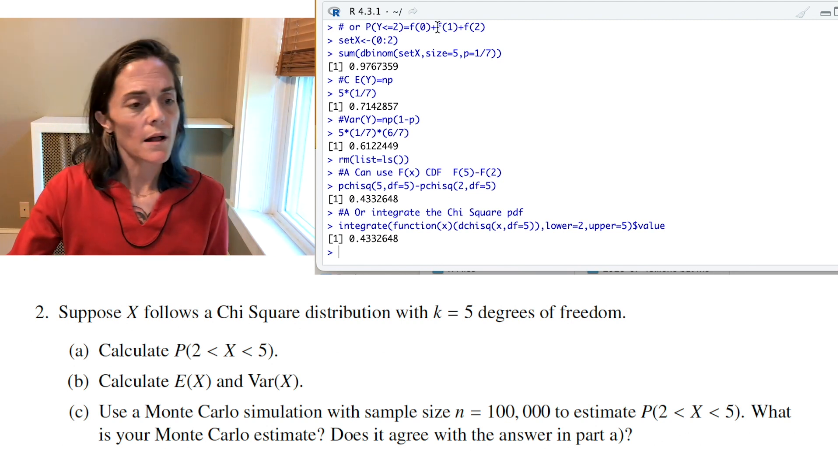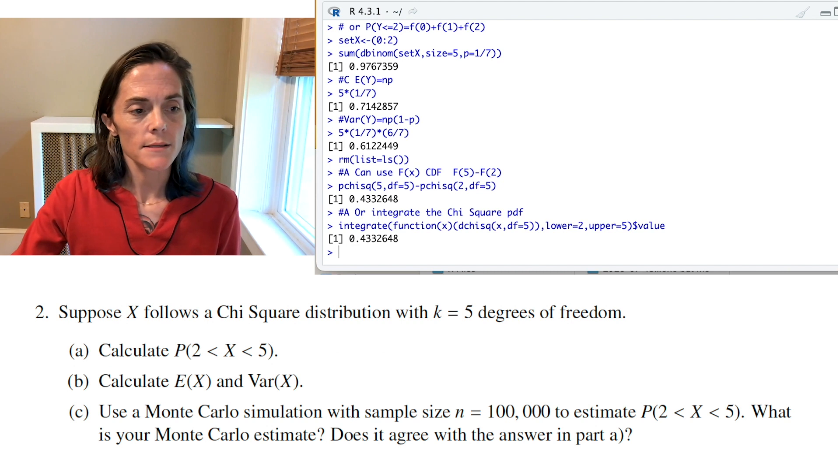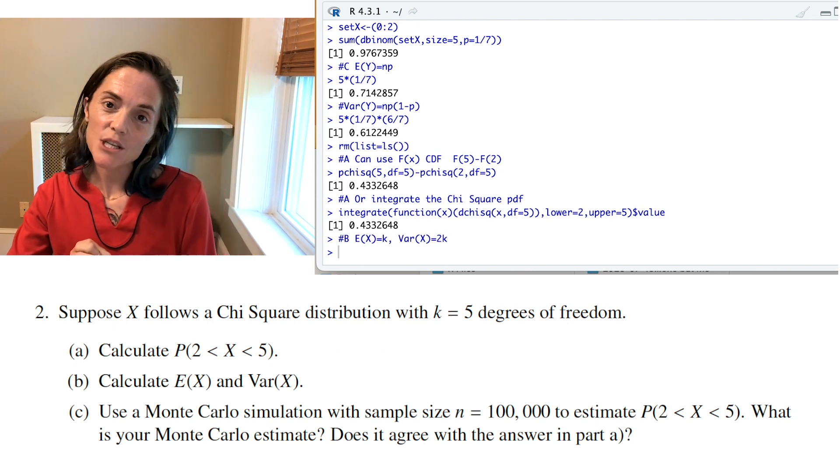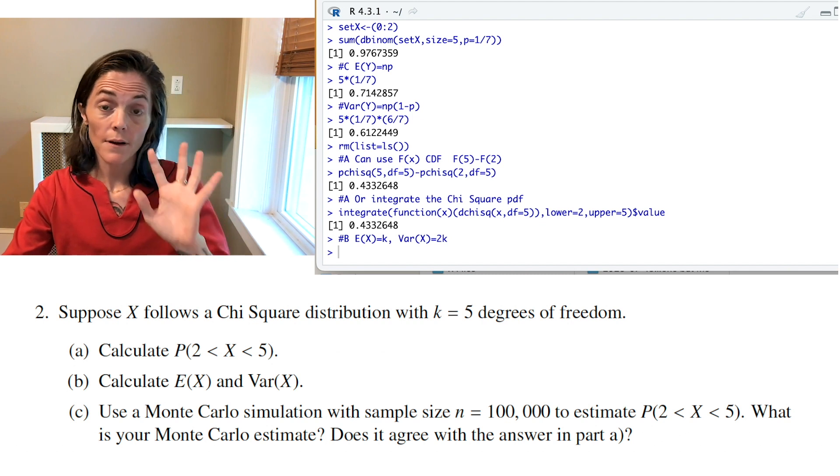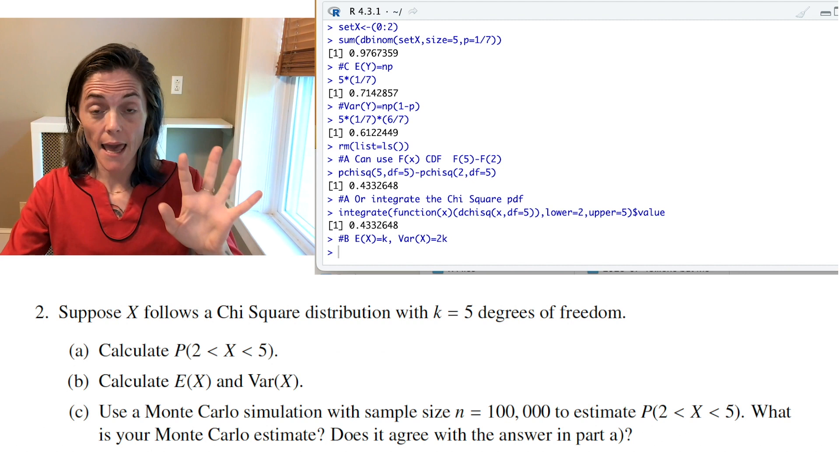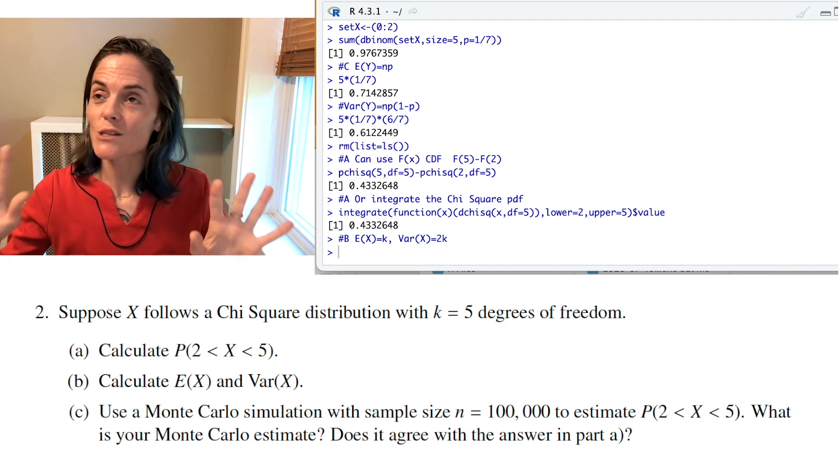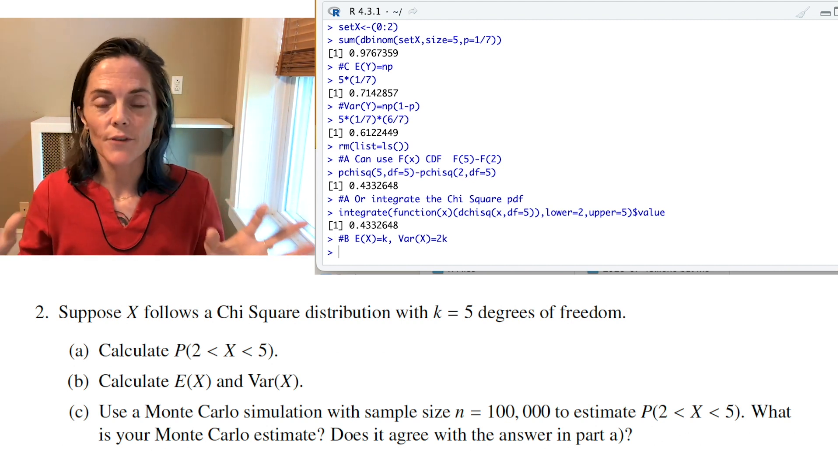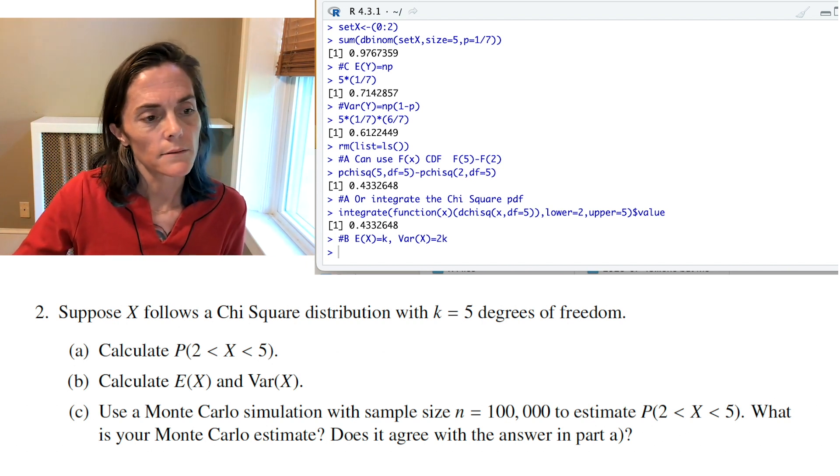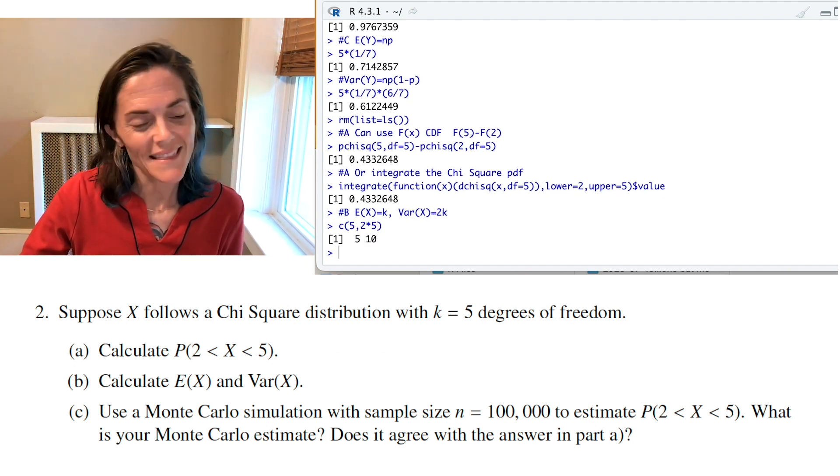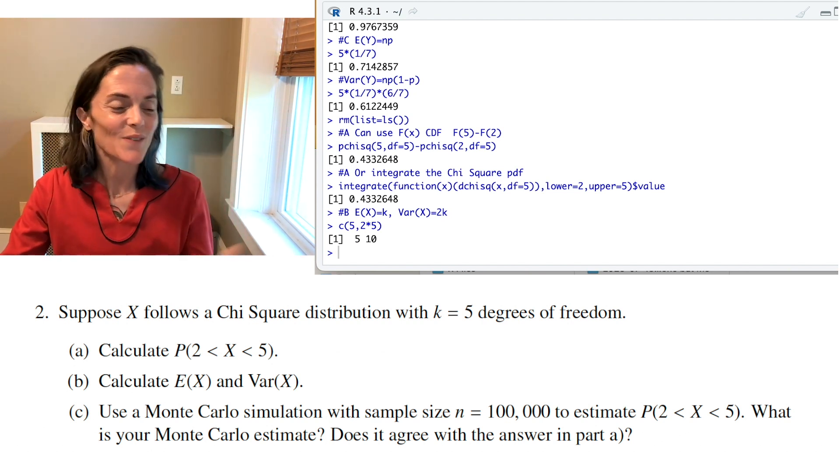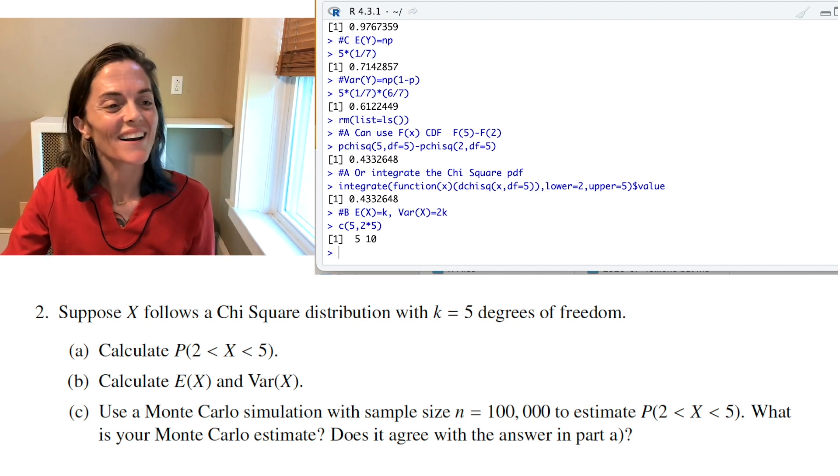Okay. Well, the mean and the variance, these are formulas we discussed in the lecture video. The mean of chi-square, where you have k degrees of freedom, is k. The variance of chi-square, when you have k degrees of freedom, is 2k. So, we can just run this. We have 5 and 10. I didn't need R for that, but it's fine. I am putting my answers as we go along.